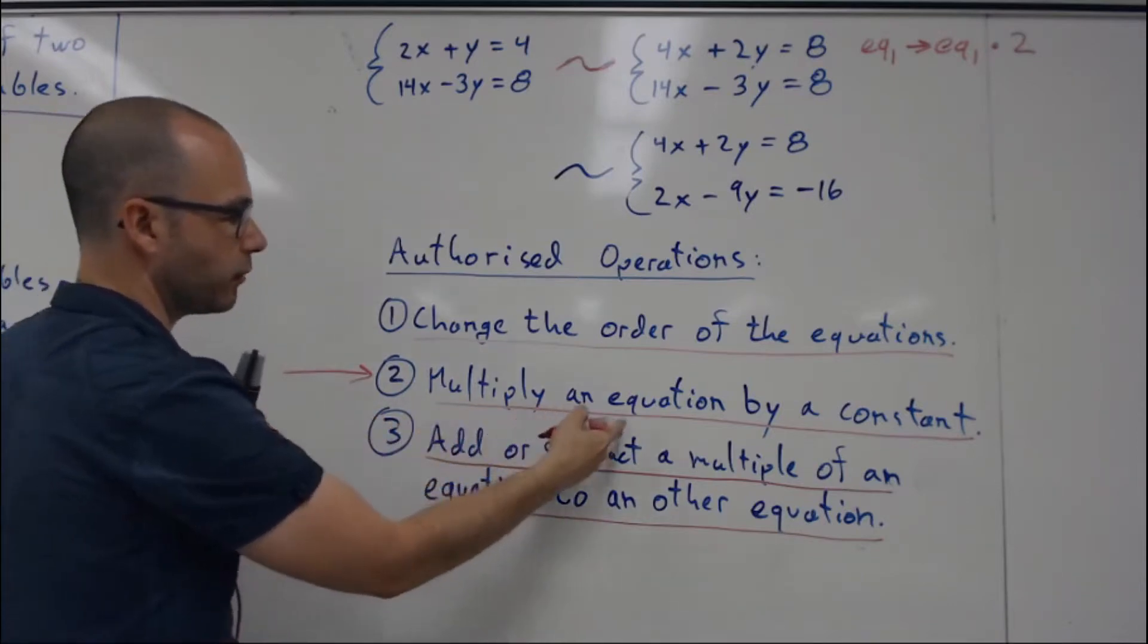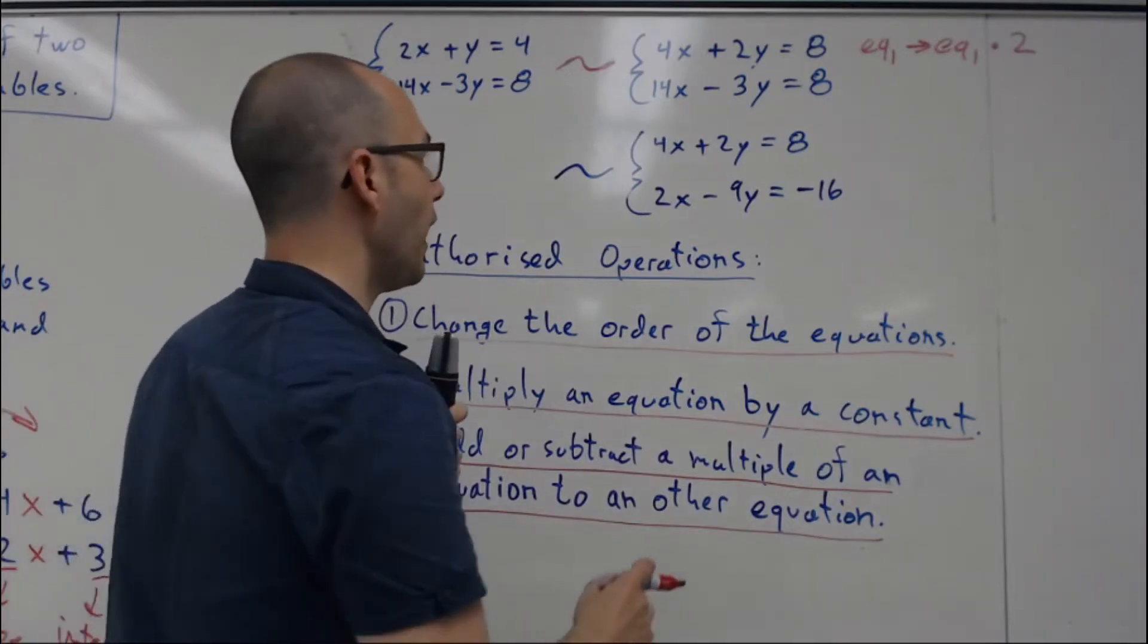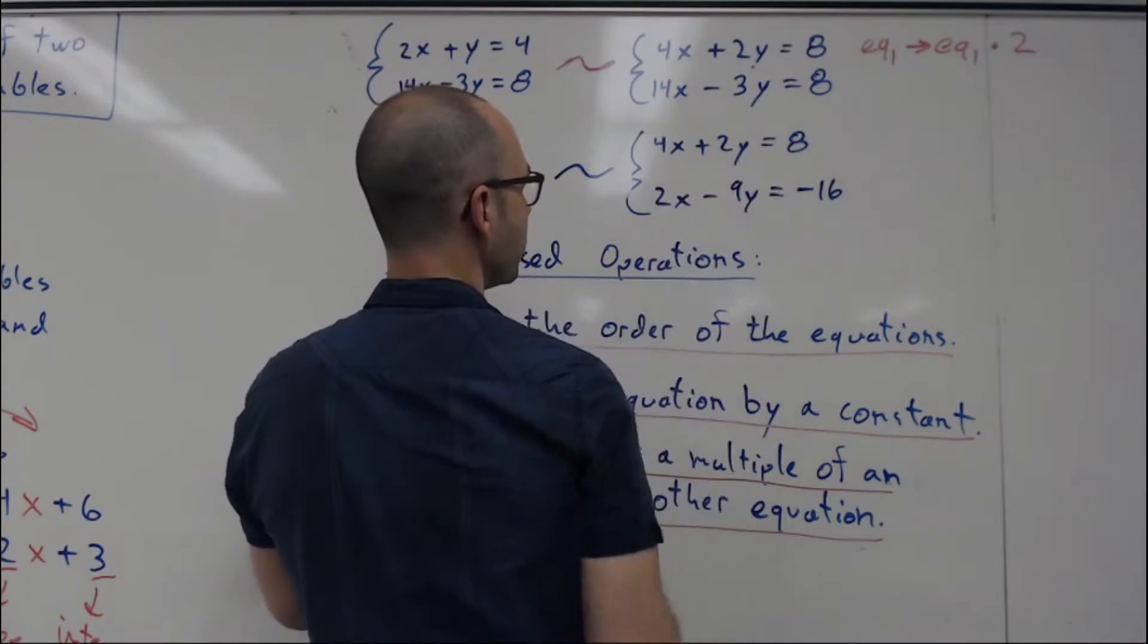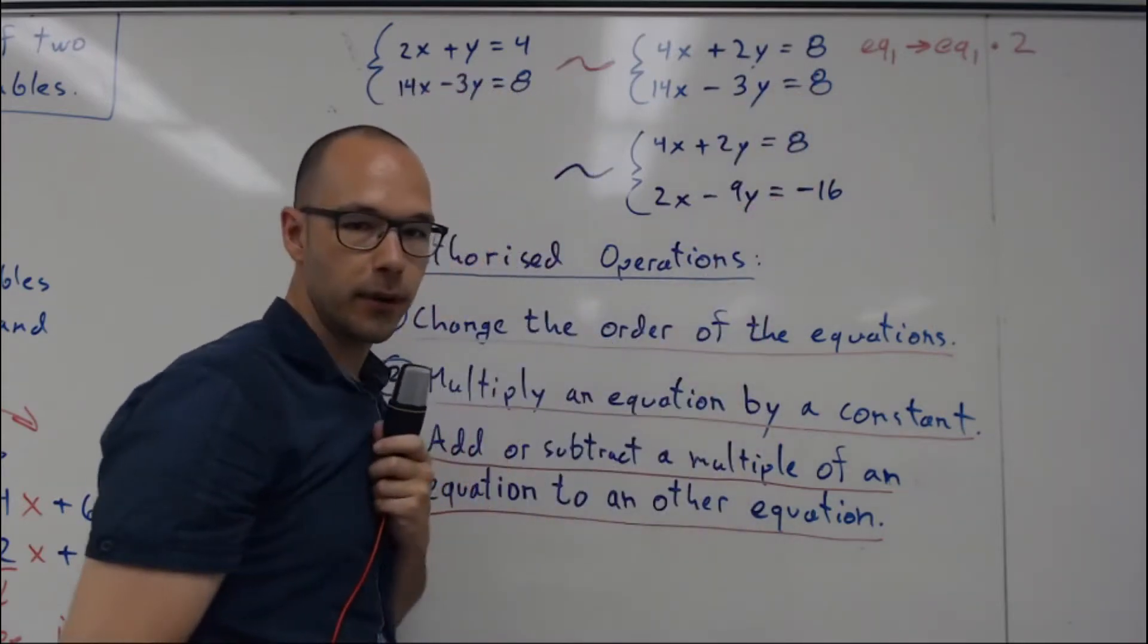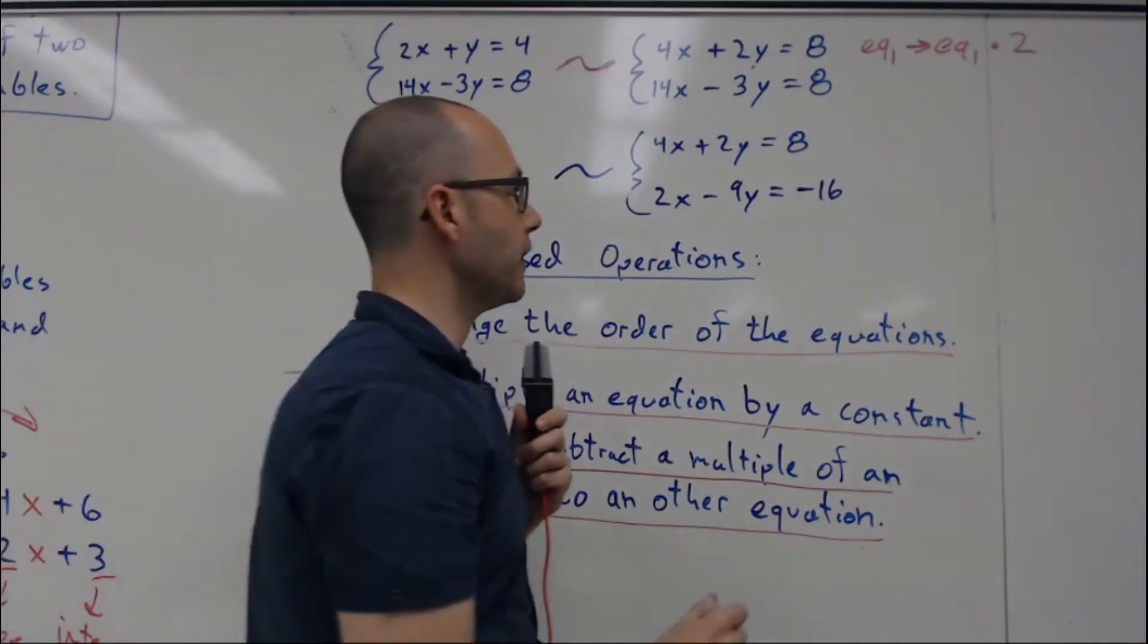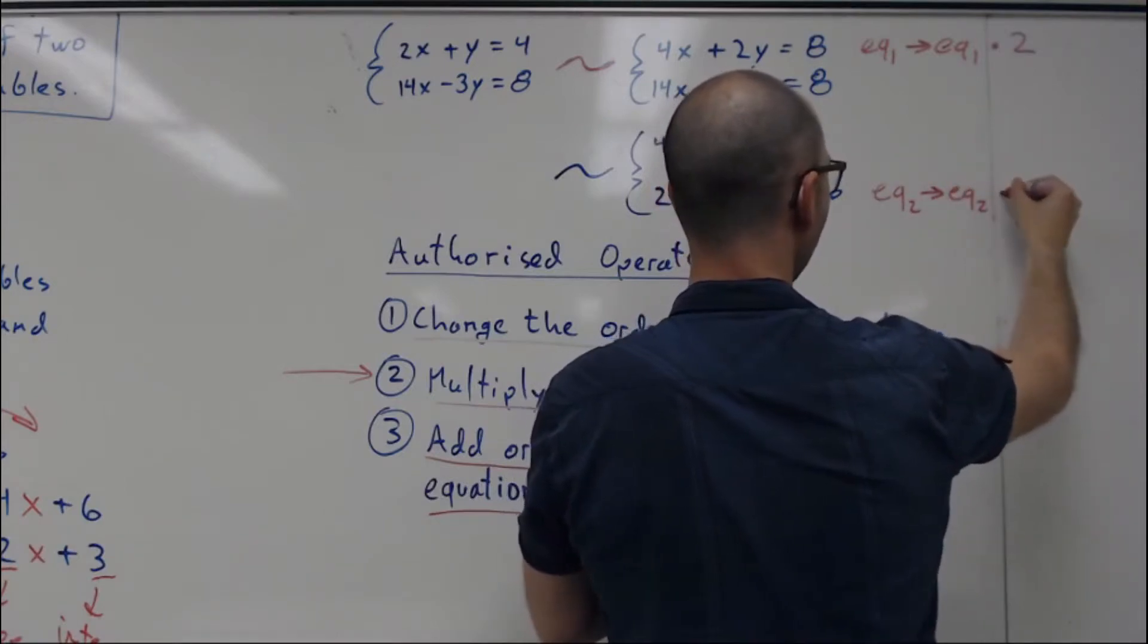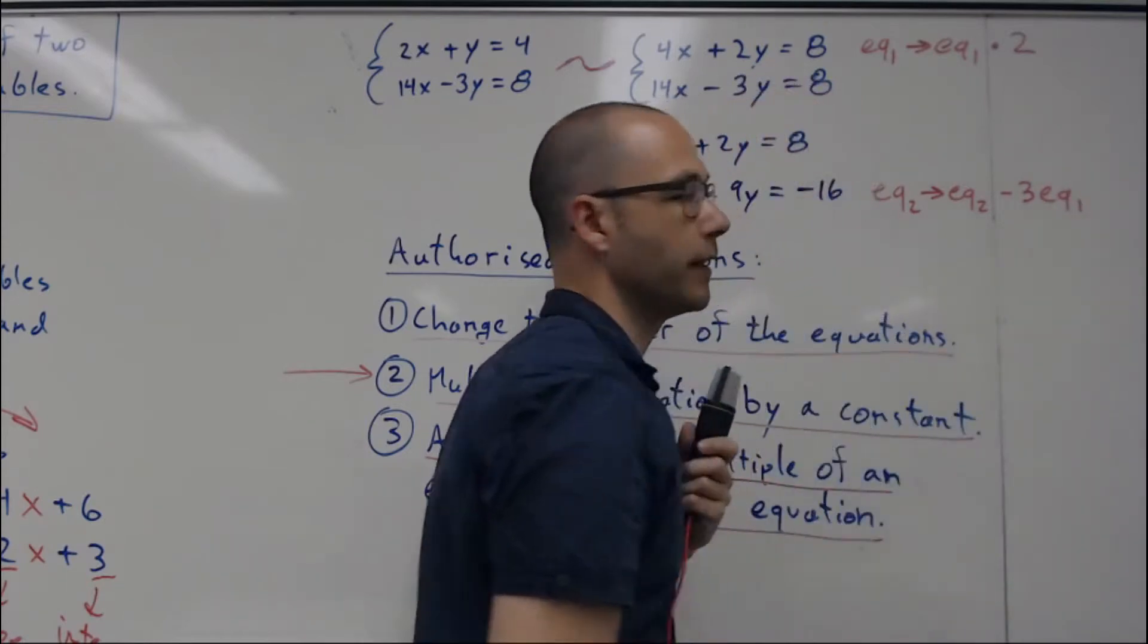And for the third one, I took the first equation and it did not change. But equation number two, something happened. And what happened is I took equation number two became equation number two minus 3 times equation number one.